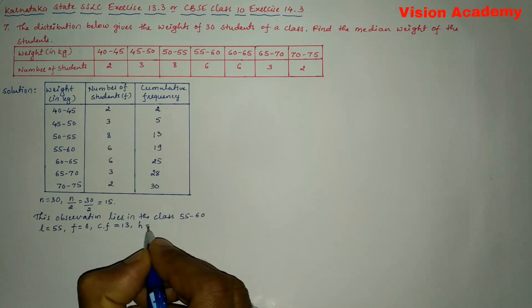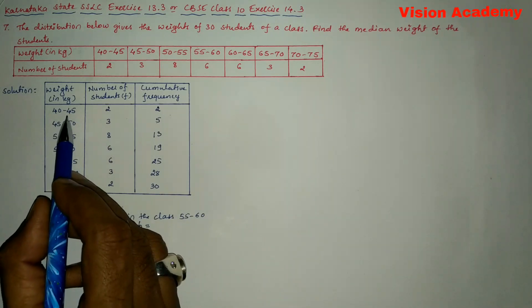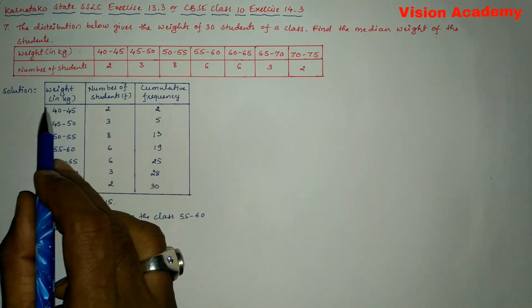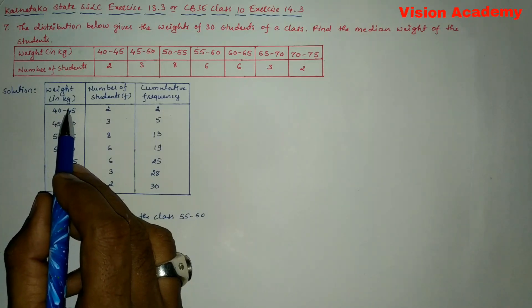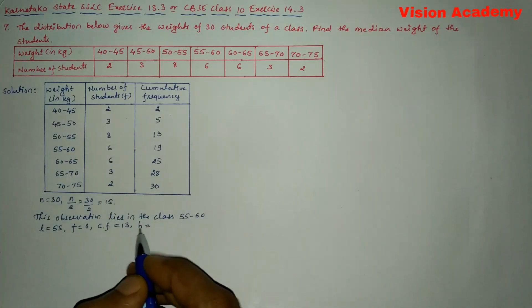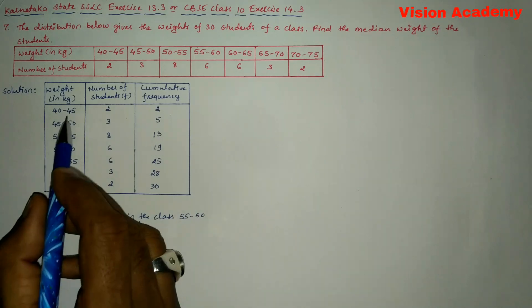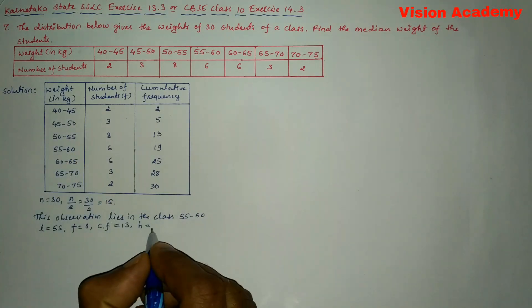Next we will write h equals, h is class size. So here we can find the difference between the upper class limit and lower class limit gives us the class size that is h. So here 45 minus 40 gives us 5.